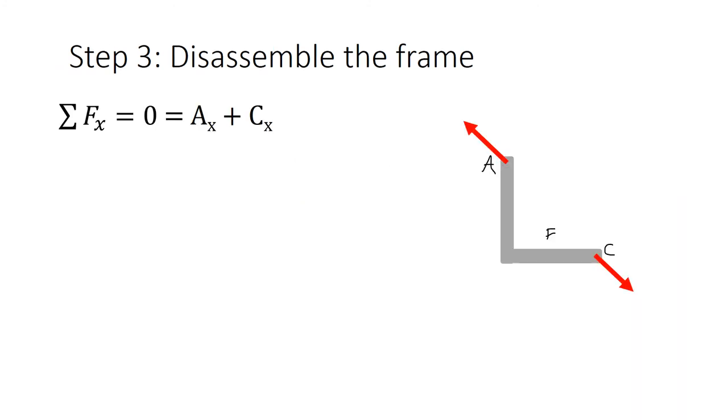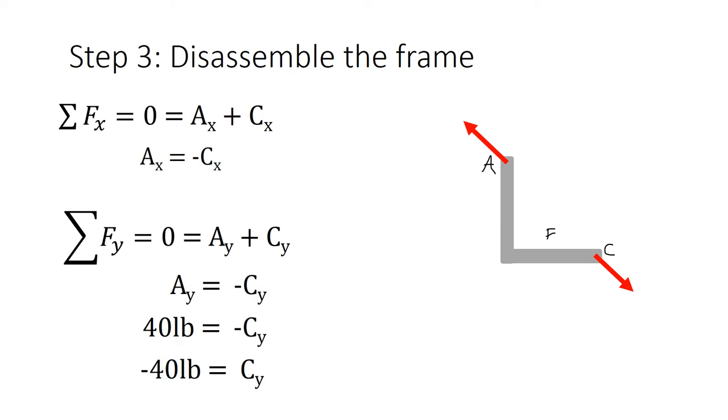Now we're going to analyze AC the same way we analyzed the entire structure. Sum of forces in x: we have Ax plus Cx, so Ax equals negative Cx. Sum of forces in y: we have Ay plus Cy, so Ay equals negative Cy. If we substitute what we know - we already found Ay - we get Cy equals negative 40 pounds.